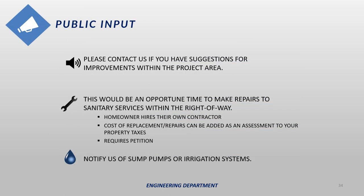We like to provide opportunities for residents to provide feedback or ask questions, so please feel free to reach out by phone or send me an email with any questions or suggestions. This is also a good time to talk to us if you need to make repairs to your existing sanitary service. There are ways the cost of replacing the service on your property can be assessed to your property — there are restrictions and some paperwork required, so please reach out to us for more details. Lastly, please let us know if you have a sump pump line or an irrigation line in the boulevard. Often we only find out about these after we've dug them up. If you have one, we can mark it before construction and do our best to avoid it. You may be required to relocate it if we can't, but we do our best to try to avoid damaging them.